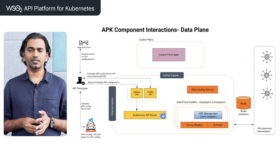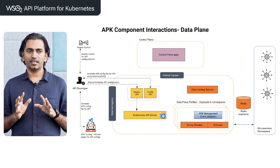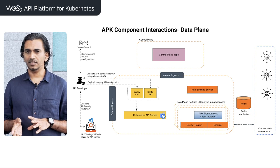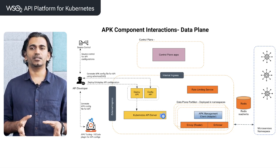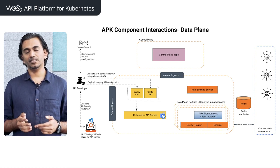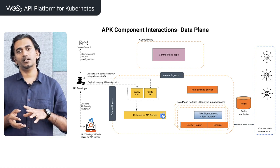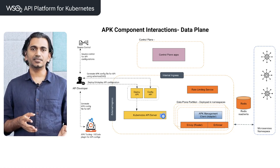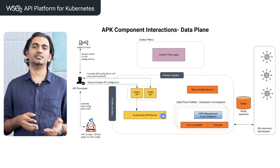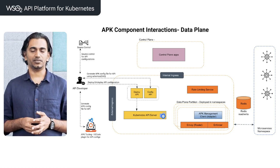It is a Kubernetes-optimized solution that can understand namespaces, services, and cluster boundaries — these concepts very well — and it can coexist within that system very well. The microservices architecture allows us to design, deploy, develop, release, and scale these systems separately without depending on other parts of the system.